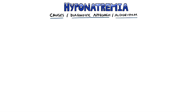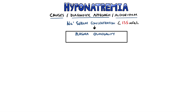So when we encounter a patient with hyponatremia, there are several steps to take in order to find the cause. The first is to assess the plasma osmolality — the concentration of the plasma. A way to get an estimate of it is by this formula: two times the concentration of sodium plus two times the concentration of potassium,